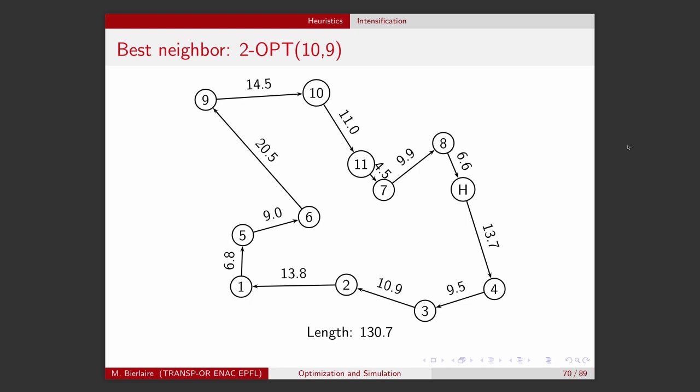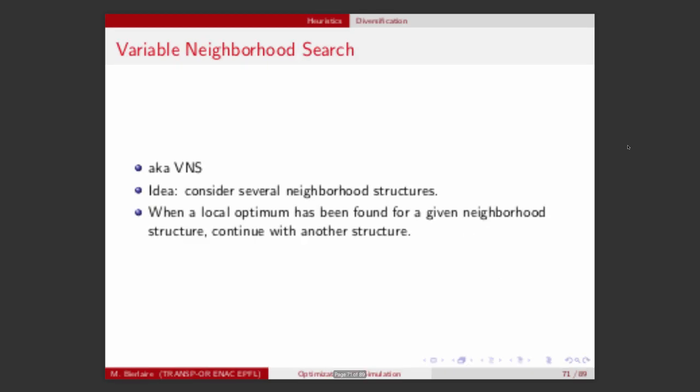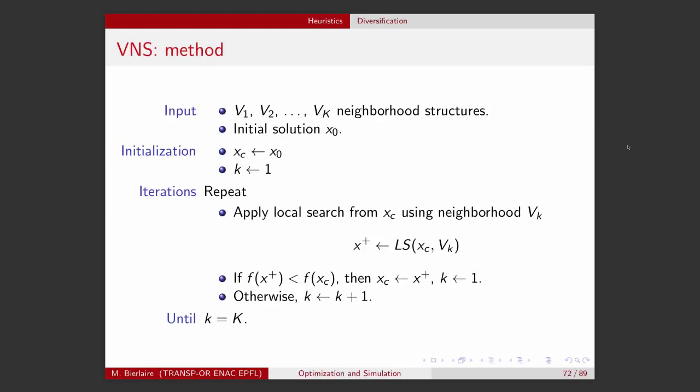We have also seen that changing the neighborhood structure will potentially change the local optimum that we reach, which is another way to diversify the algorithm. This technique is called Variable Neighborhood Search — it's a method of diversification that considers several neighborhood structures, applies local search for a given structure, then changes the structure and continues from the point obtained.